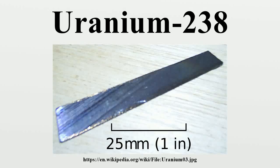Uranium-238 is the most common isotope of uranium found in nature. It is not fissile, but is a fertile material. It can capture a slow neutron and after two beta decays become fissile.